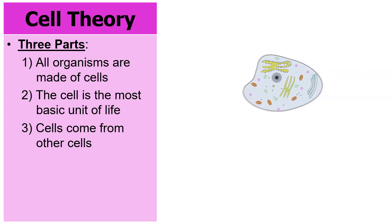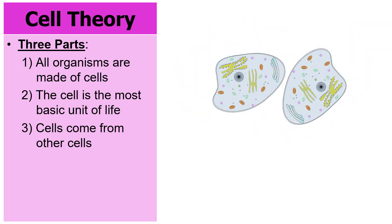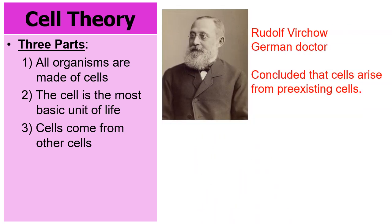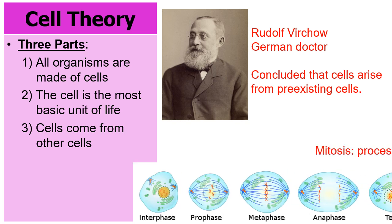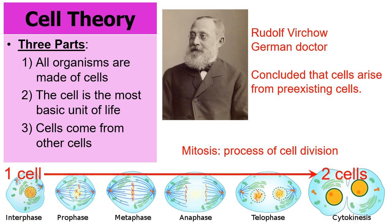The final part of the cell theory is that cells come from other cells. Here's a diagram of a cell — cells don't just poof into existence. They go through a dividing process. Rudolf Virchow, this German doctor here, really concluded that cells come from pre-existing cells. They go through a dividing process called mitosis. On the far left is one cell, and then it goes through the process of mitosis to divide itself into two cells. They don't just poof into existence; they go through this division process.